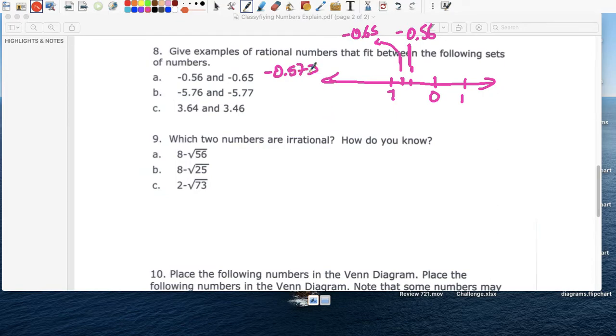0.572, 0.573, 0.574, 0.575, 0.58, negative 0.58. So any number, negative 0.64, negative 0.6499999. That's between those two numbers.